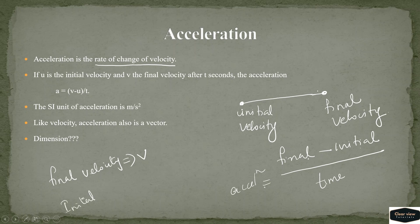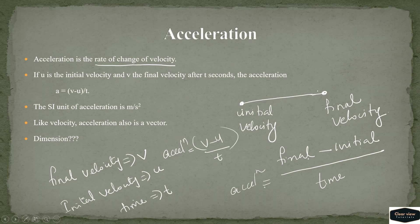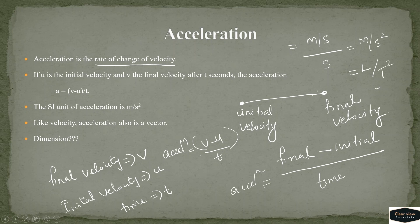When velocity increases, that is acceleration. The unit of acceleration is meter per second squared. Velocity divided by time gives meter per second divided by second, which is meter per second squared. The dimensional formula of acceleration is LT⁻².